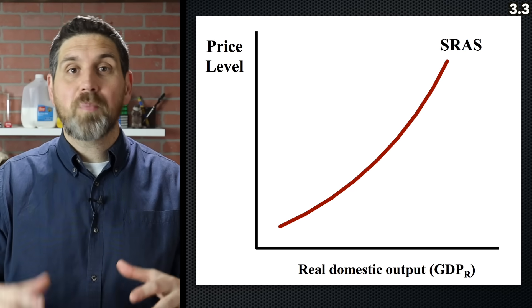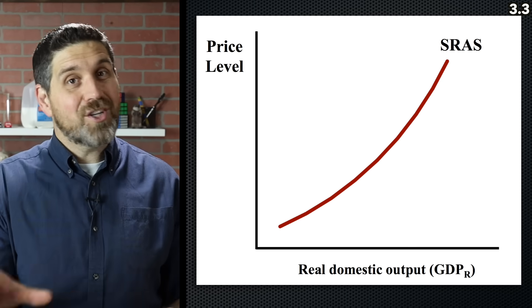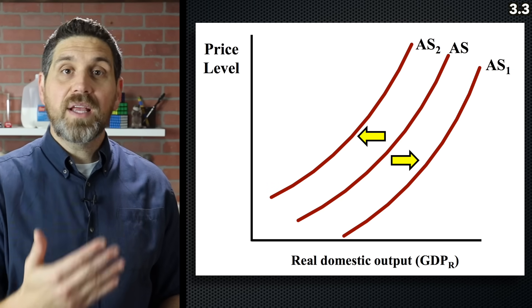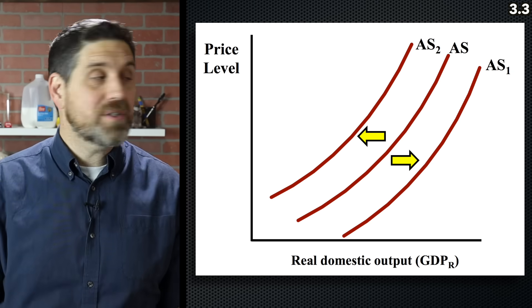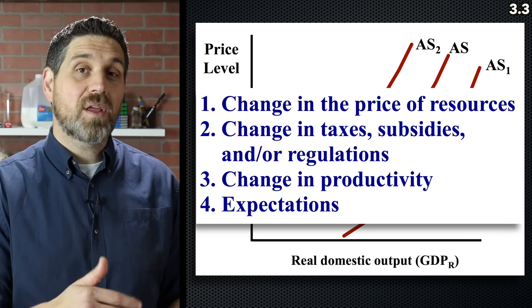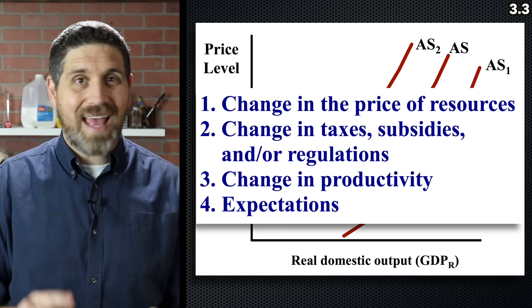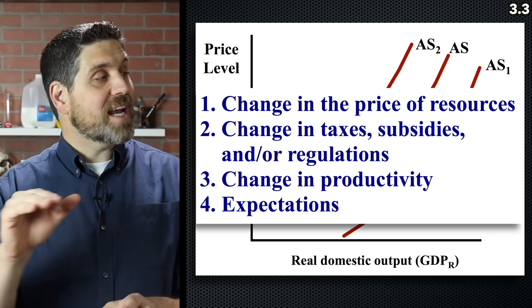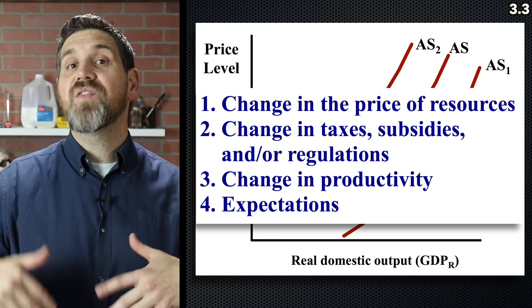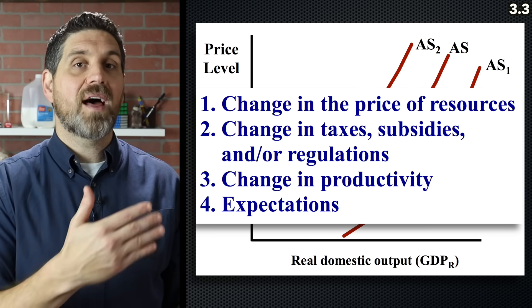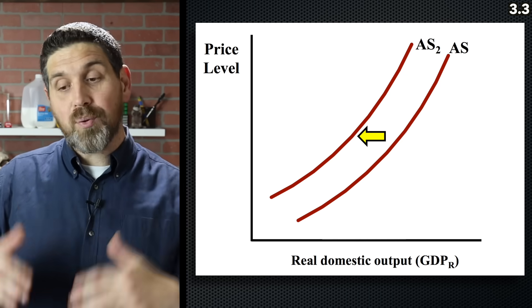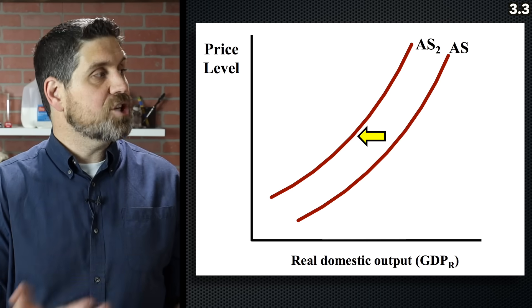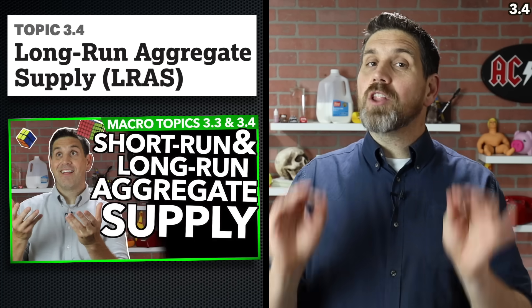In the short run, wages and resource prices don't change. In the long run, wages and resource prices are going to adjust. The short-run aggregate supply can shift — an increase is to the right, a decrease to the left — and anything that affects a lot of producers will shift the curve. A change in the price or availability of key resources can shift it, as can government actions like taxes and subsidies, or productivity changes. Another shifter is expectations of inflation. If people expect inflation to go up, the short-run aggregate supply curve will shift to the left because wages and contracts will all increase. If a worker thinks prices are going to go up, they'll demand a raise, increasing costs to firms and shifting the aggregate supply curve.